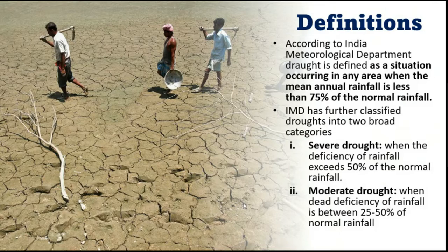The most applicable definition in Indian conditions is from the India Meteorological Department, which defines drought as a situation occurring in any area when the mean annual rainfall is less than 75% of normal - where normal is considered more than 1100 millimeters. The IMD has further classified droughts into two broad categories: severe drought, when the deficiency of rainfall exceeds 50% of normal; and moderate drought, when the deficiency is between 25 to 50% of normal rainfall.